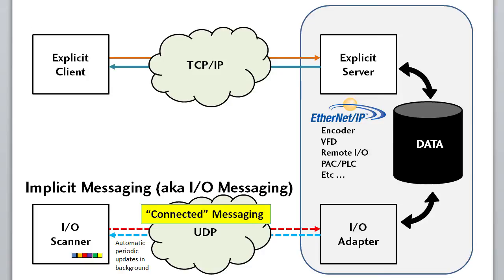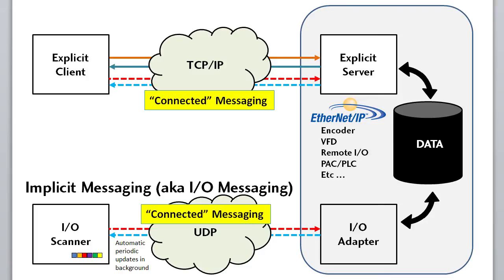Explicit messaging can also be set up as connected messaging to give you periodic updates, which is useful because it is still using the TCP/IP protocol to guarantee message delivery. However, it adds a larger burden on the processor because it has a lot more bulk in the messages and handshaking, which you usually don't need for periodic updates.